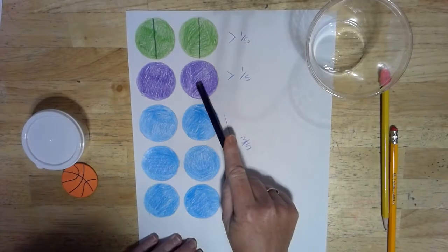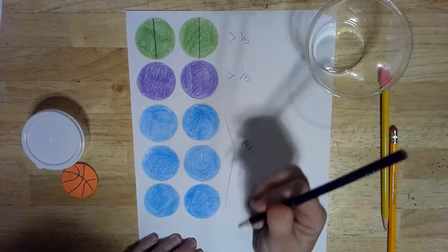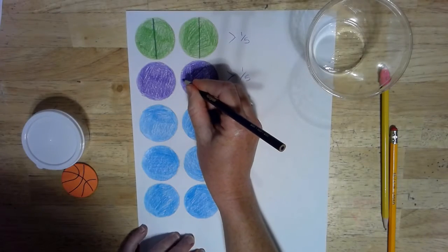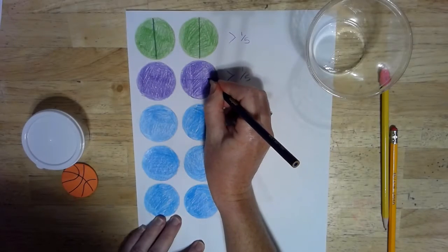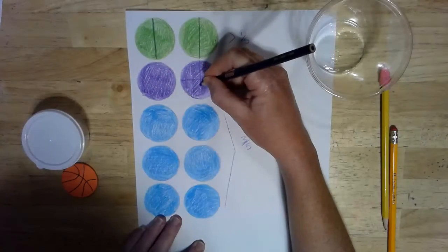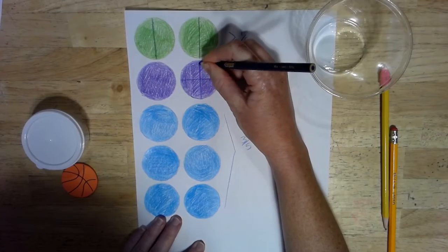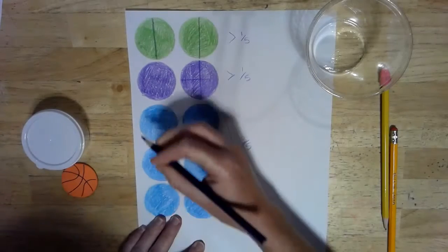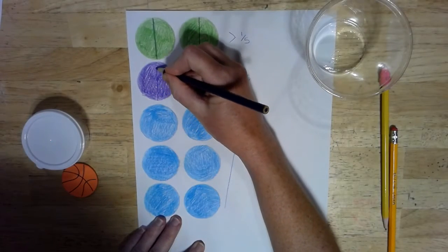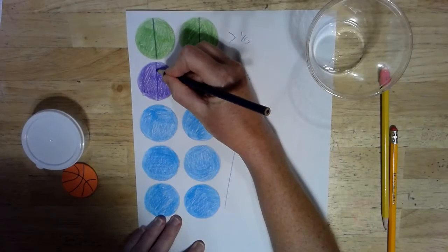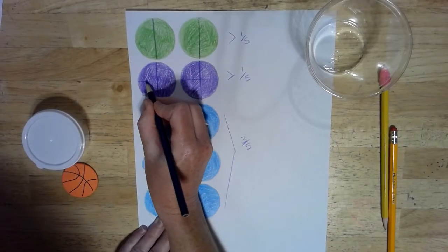Next, for our second set, we are going to divide them into one-fourths. So, just do a plus sign in the middle to divide them into four pieces each.